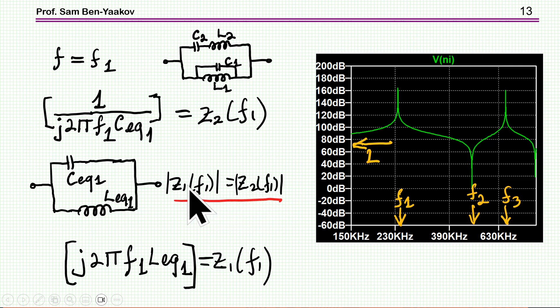So, this will be one equation that we have. Z, that is Z1, Z1 is the impedance, the actual impedance, but at F1 is equal to Z2 of this branch at F1.